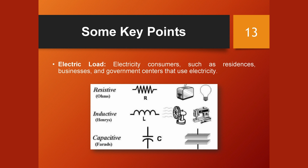Electric load refers to electricity consumers such as residences, businesses, and government centers that use electricity. There are three types of electrical loads, varying according to their leading or lagging time relationship between voltage and current: resistive, inductive, and capacitive. The resistance in a wire or conductor causes friction and reduces the amount of current flow if the voltage remains constant. Byproducts of this electrical friction are heat and light.